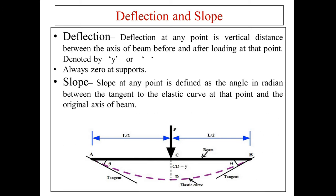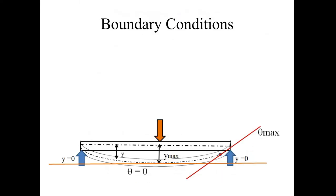Slope at any point is defined as the angle in radians between the tangent to the elastic curve at that point and the original axis of the beam. The maximum deflection is at the center; deflection is zero at points A and B. If you take any point on the elastic curve and draw a tangent, the angle between the tangent and the horizontal is the slope, measured in radians. Slope is denoted by theta or dy/dx, and deflection is denoted by delta.